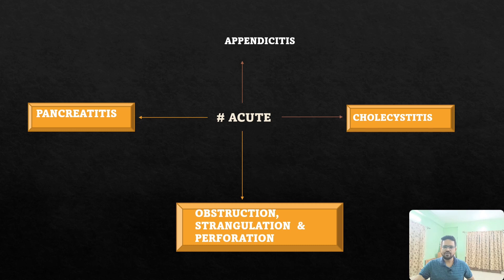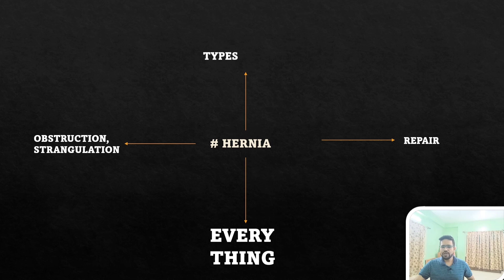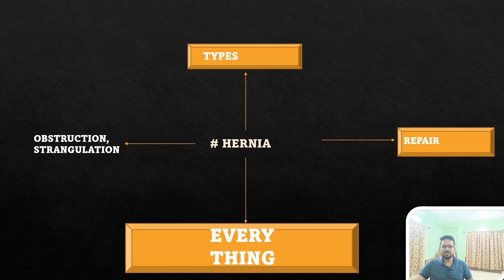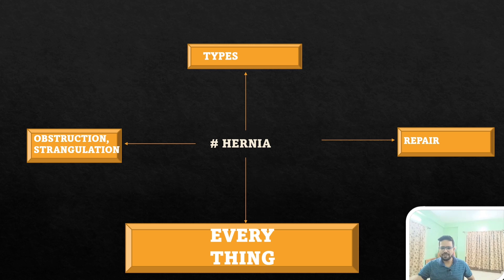The fourth important topic is hernia. Every year they give five to six questions from hernia — complications like obstruction and strangulation, types of hernia, and different types of repair such as Shouldice repair, Lichtenstein repair, and other modified repairs. Read every detail of hernia; definitely five to six questions will come from this topic.